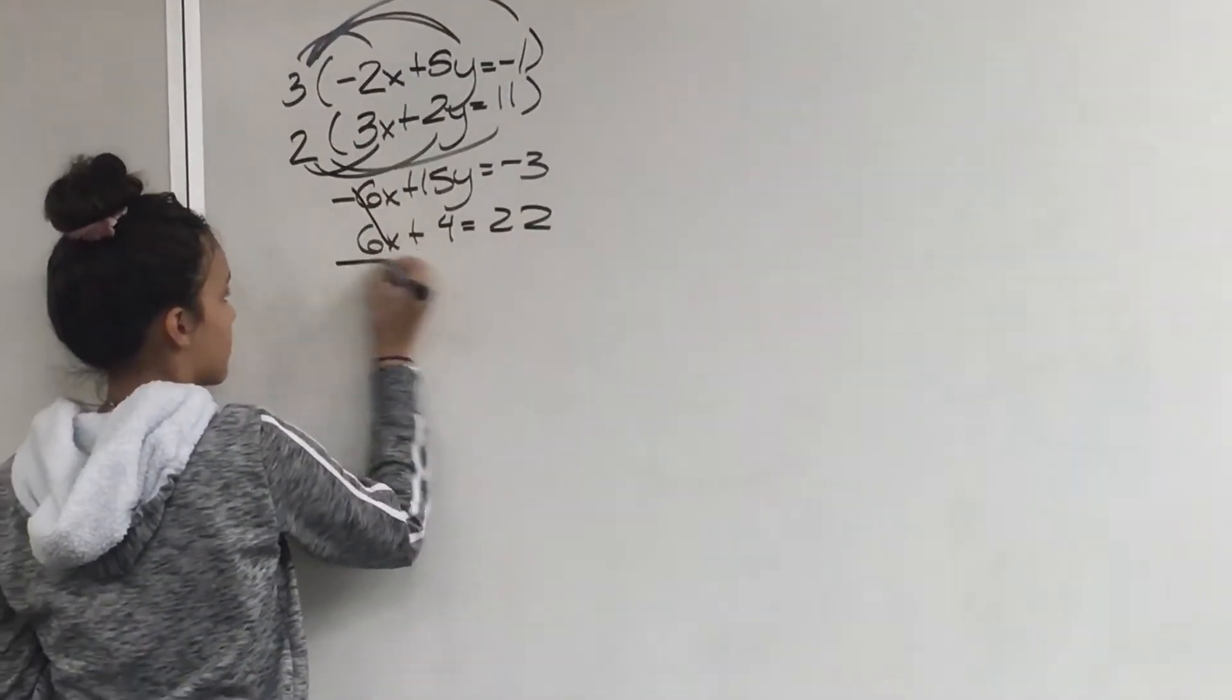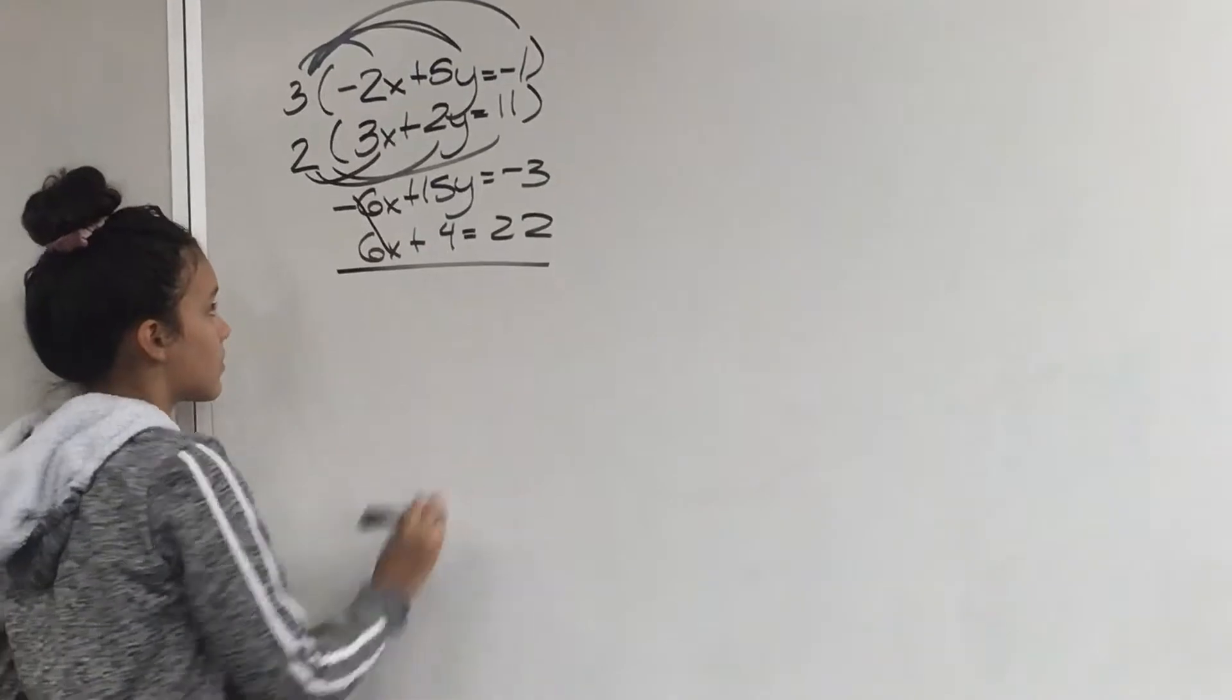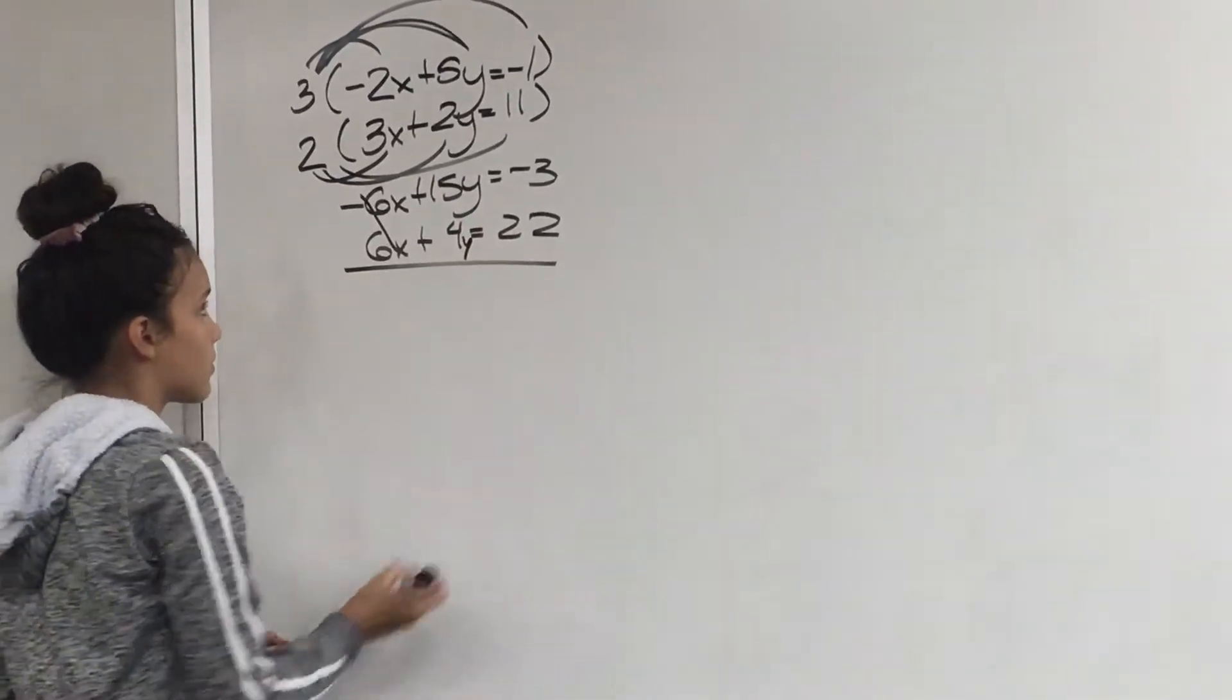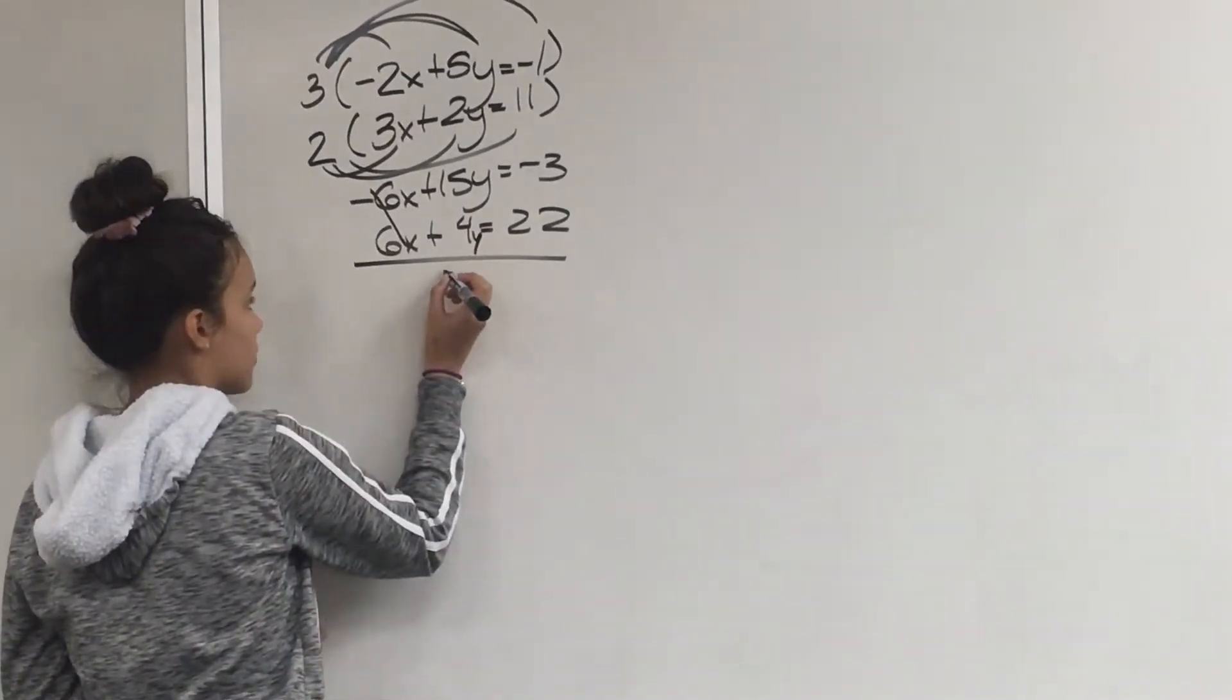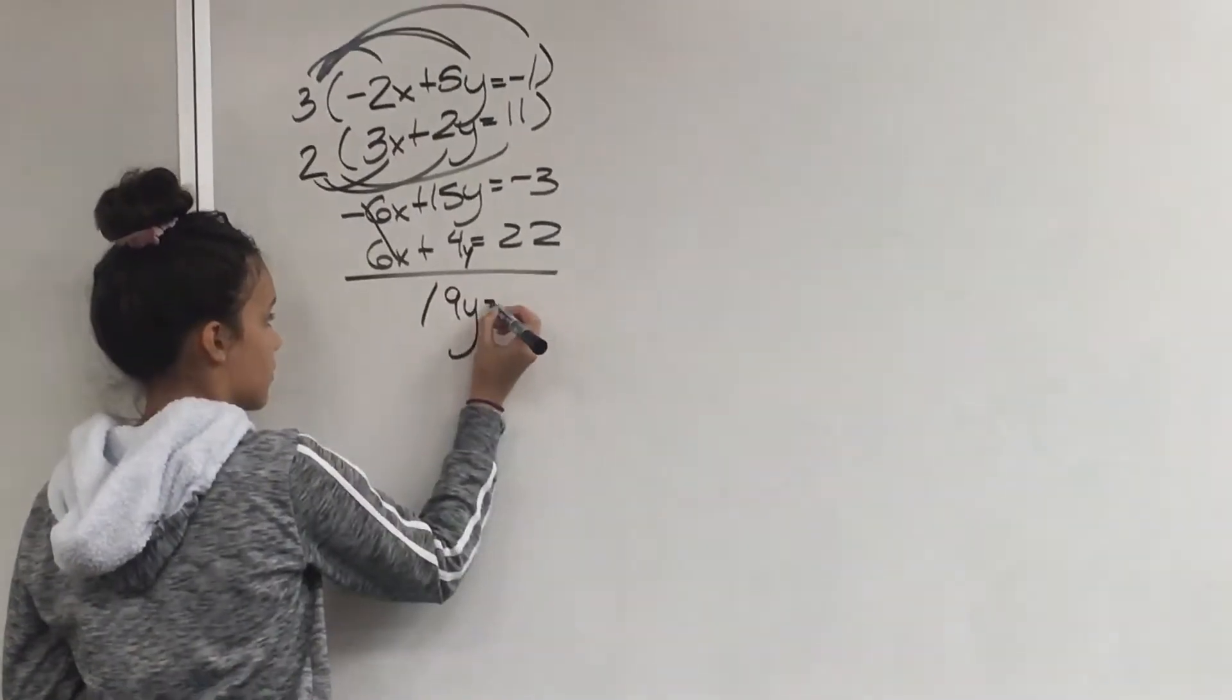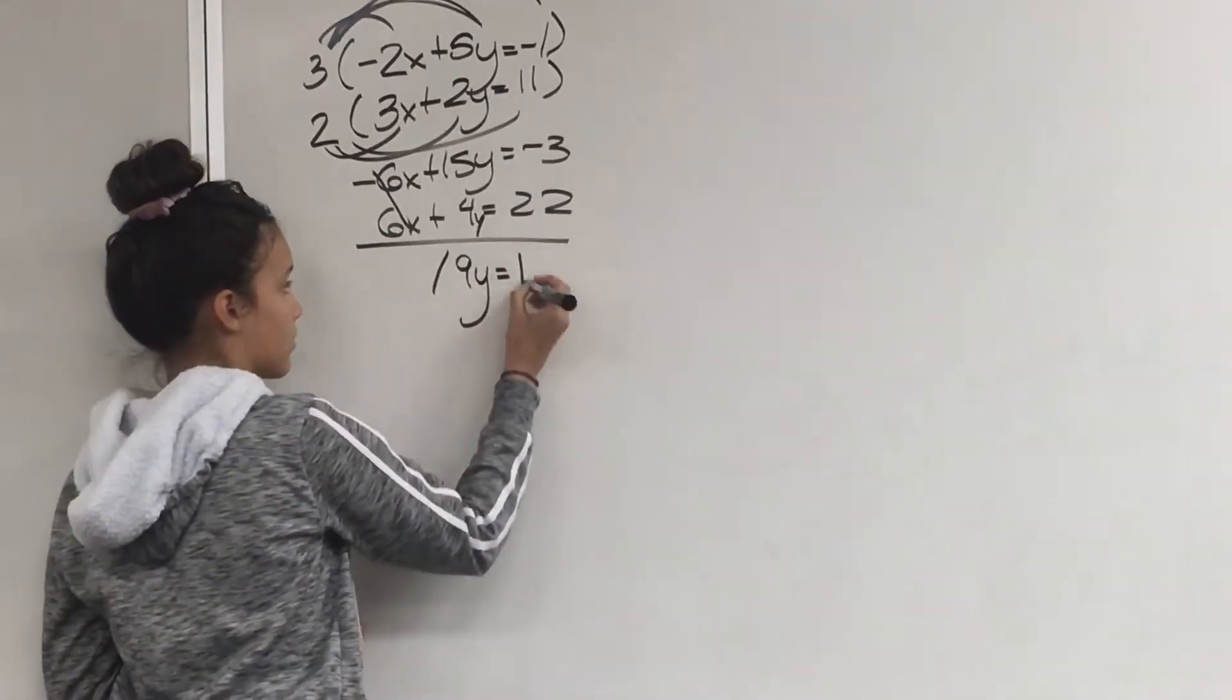Next you would eliminate the x value and then solve for y. And now you add 15y plus 4y and get 19y. Then add the other side, which would give you 19 as well.